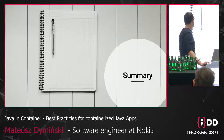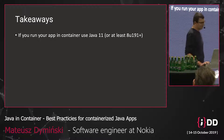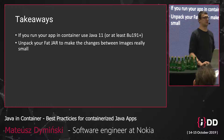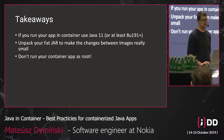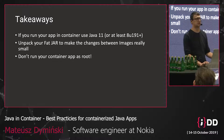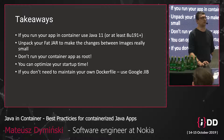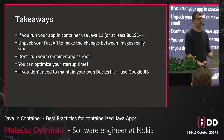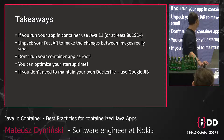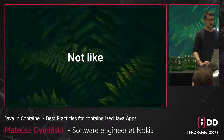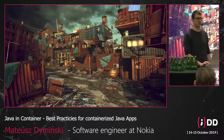Let's sum everything up. If you run your app in a container, please use Java 11 or at least Java 8 update 191. Please unpack your fat jar — it will make your Docker build phase faster and pushing to the registry much faster. Don't run your container app as root — it's a security problem. You can still optimize your startup time by looking at GraalVM or Java modules. And if you're lazy and don't want to maintain your own Dockerfile, use Google Jib. Hopefully your containers would look nice. Thank you very much.